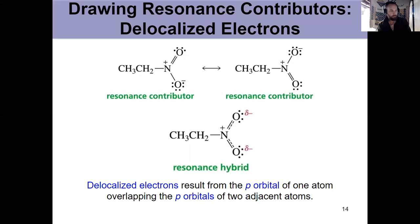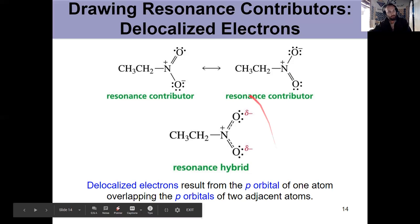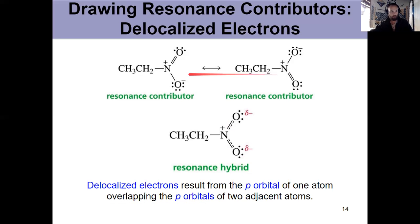So what we'll focus on in this video and video two from chapter eight, for the rest of this video and all of video two, is drawing resonance contributors and the proper way to show delocalized electrons. Because remember, we can't conveniently always show a resonance hybrid. We draw resonance structures to show the different resonance contributors. So we need an easy way to show the delocalized electrons that result from the p orbital of one atom overlapping the p orbitals of the adjacent atoms. So here it's these p orbitals that are overlapping to form those delocalized electrons.